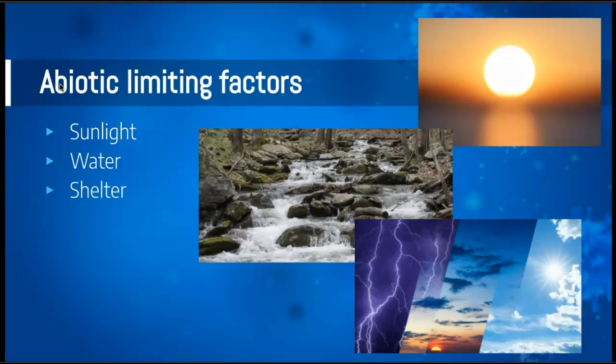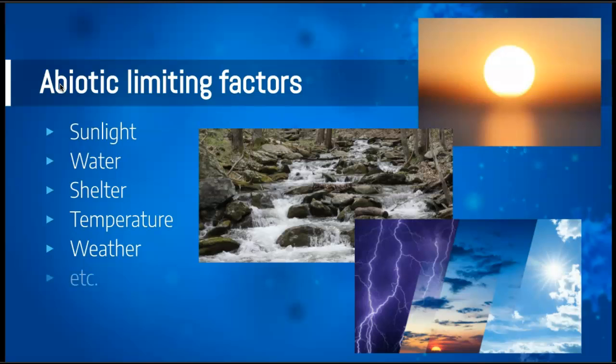How much shelter is available for animals, what the temperature is — whether it's a very cold climate, very warm climate, or somewhere in the middle — and the type of weather that occurs in an area all matter. For example, look at the weather in a desert versus the weather where we live — very different types of weather. So that will limit what types of species can live in the area. Pretty much most of the abiotic factors we talked about earlier are also limiting factors.